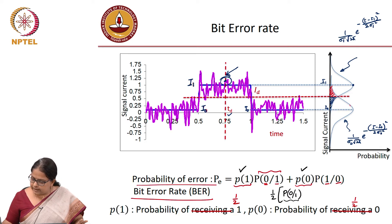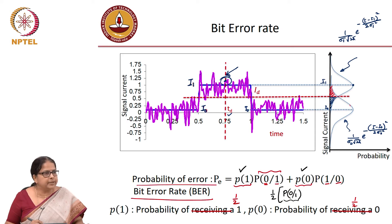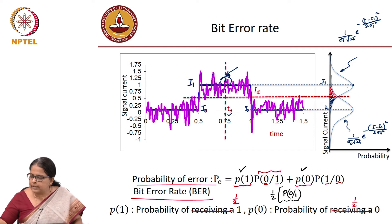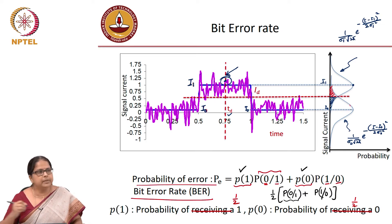Can you identify where that conditional probability is in that plot? Is it the red shaded part or the blue shaded part? The probability of detecting a 0 given that I have transmitted a 1 — that is blue. Plus probability of detecting a 1 given that I transmitted a 0 — that is red. I detected it as 1, but I actually transmitted it as 0.